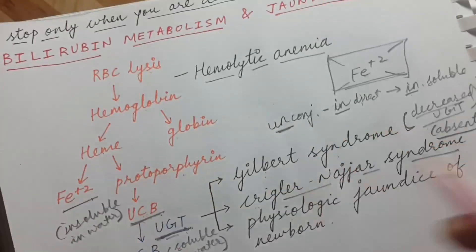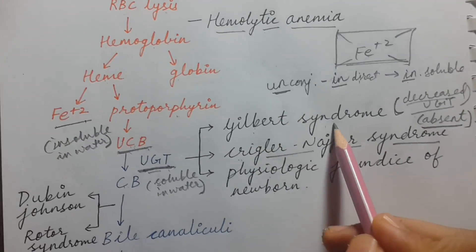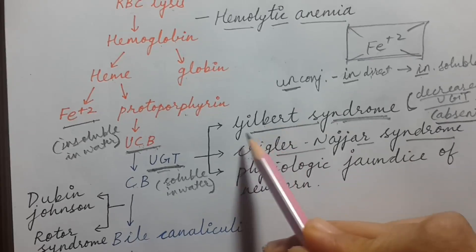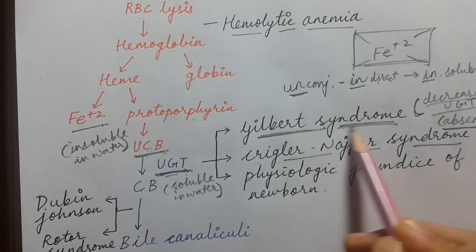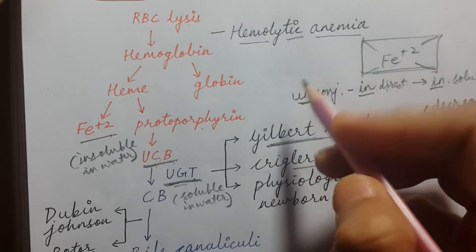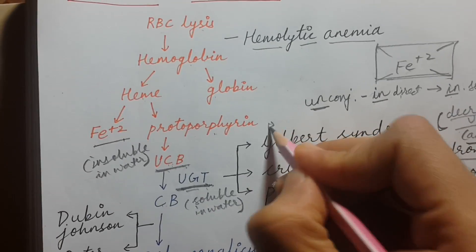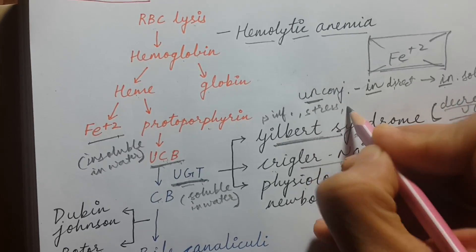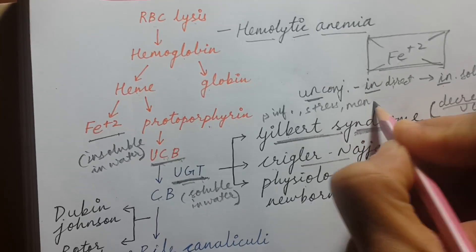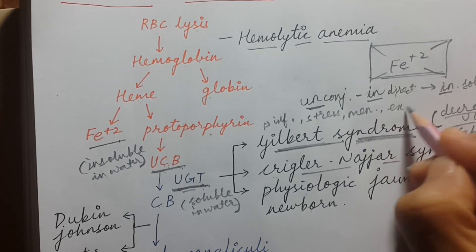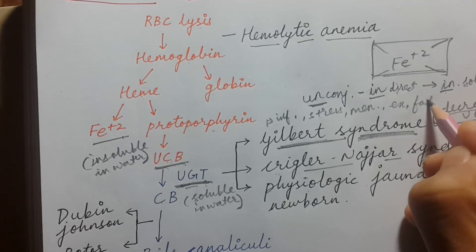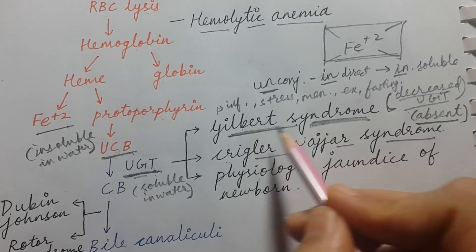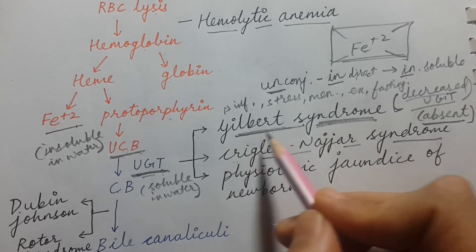In Gilbert syndrome, when patients have either some kind of physical stress or mental stress, they develop jaundice. Questions related to Gilbert syndrome always mention some kind of stress — it can be infection, mental stress, menstrual cycle, exercise, fasting, or any other cause that causes stress to the body.